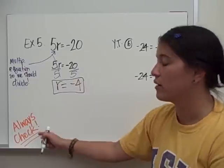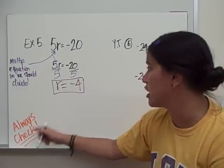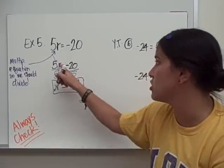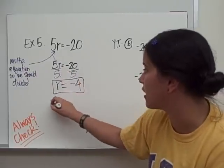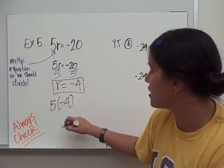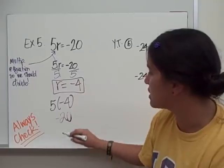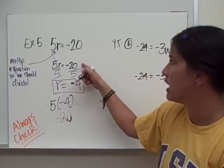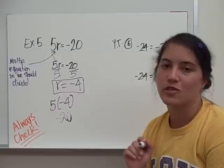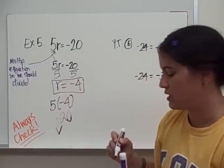To check, we always check our work. We substitute negative 4 back in: 5 times negative 4 equals negative 20, and that is what we started with. So it checks out.